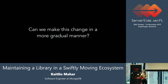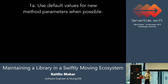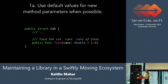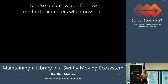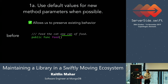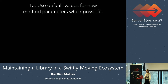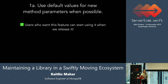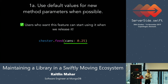So could we make this change a little more gradually? One helpful way is using default values when you introduce new parameters to methods, if possible. We could introduce a default value for the cans parameter of 1, preserving the existing behavior. Anyone relying on this method to give their cat one can won't experience any change in behavior, their old code still compiles, but users who want the new feature can start using it now.